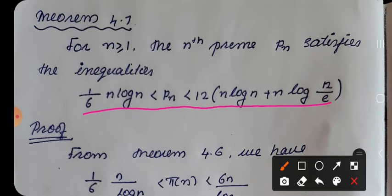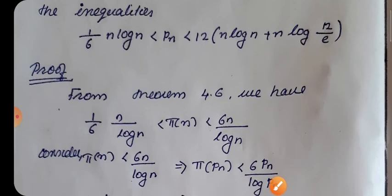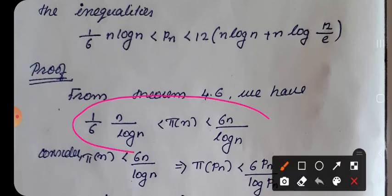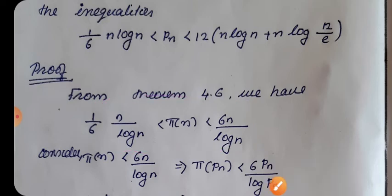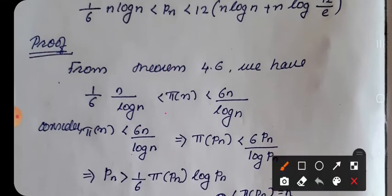To prove this, we will use Theorem 4.6. You have to remember this statement: 1/6 · n/log(n) < π(n) < 6n/log(n). This is the 4.6 statement. We will consider the second part, that is π(n) < 6n/log(n).